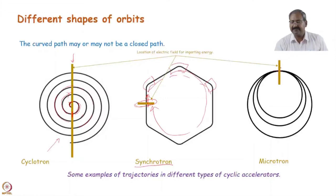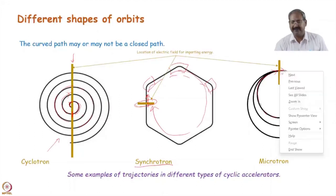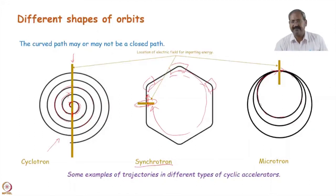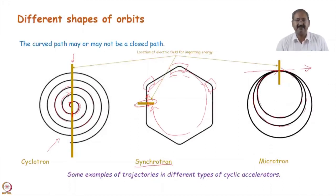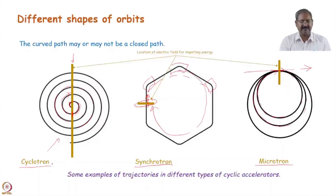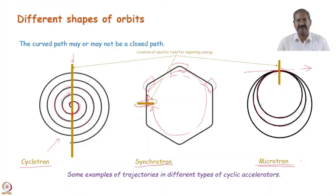Another possibility: a constant magnetic field exists over the whole space and the particle passes through an RF cavity, gaining energy. The constant magnetic field causes a circular trajectory, and the particle passes through the RF cavity again. With higher energy, the radius of curvature increases, producing a larger circular path. In this fashion there are various circular trajectories with a common tangent — these kinds of orbits are found in the microtron. The next lecture will cover the cyclotron, the one after that the microtron, and the rest of the course will cover the synchrotron.